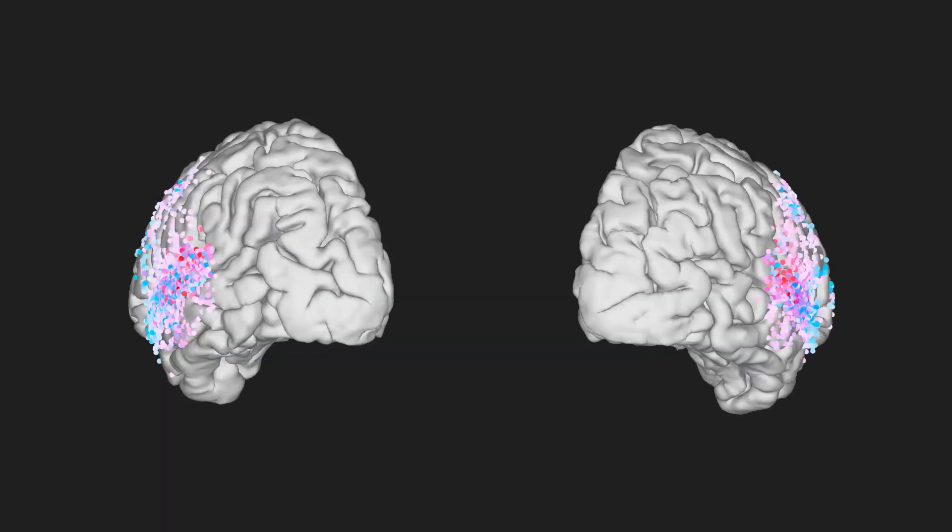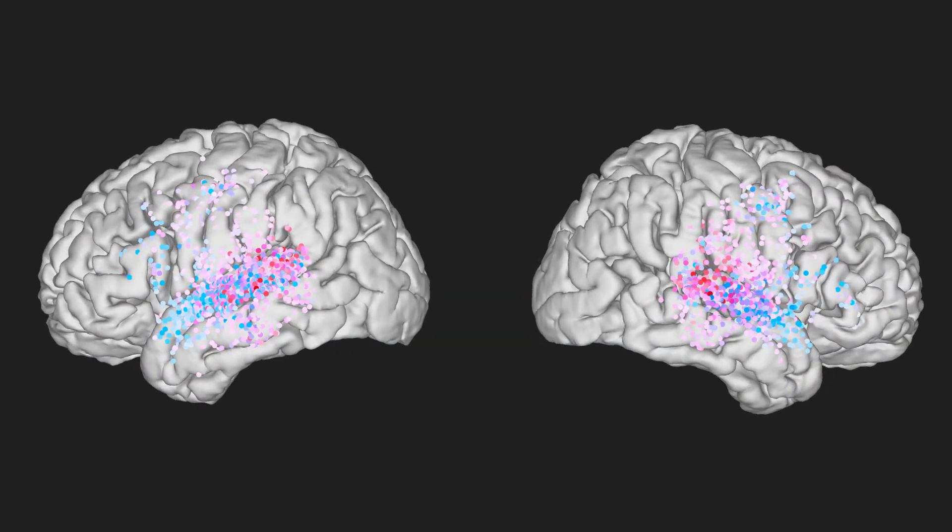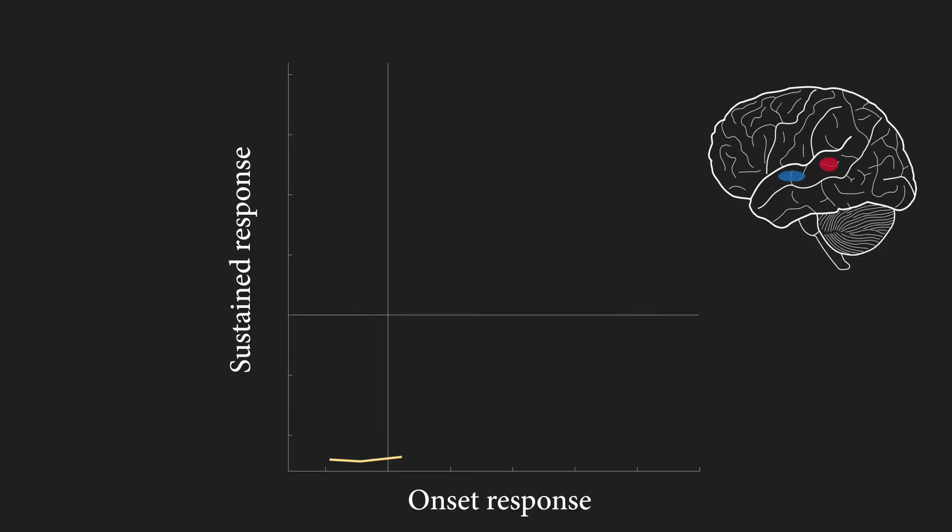Our main conclusion was that onset and sustained response types, and not phonetic feature tuning, are the main organizing property of the superior temporal gyrus. This spatial division represents a new and previously unreported parcellation of the human speech cortex, and we think provides insight in how the human brain is able to parse complex auditory scenes.